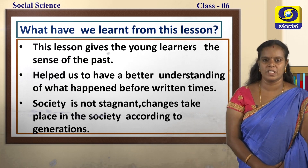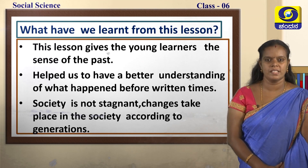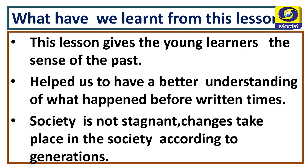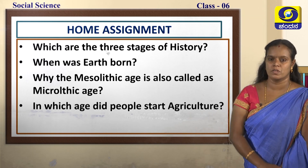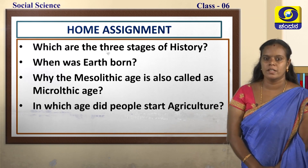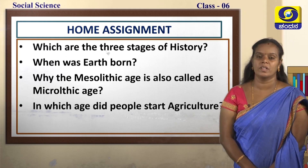Now let us see what we have learned from this lesson. This lesson gives young learners a sense of the past and has helped us understand what happened before recent times. We have also understood that society is not stagnant — it is not the same in all ages, and changes take place according to generations. For home assignment, answer these four questions: Which are the three stages of history? When was the Earth born? Why is the Mesolithic age also called the Microlithic age? In which age did people start agriculture?